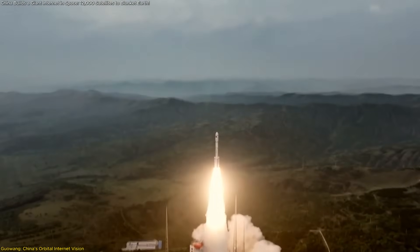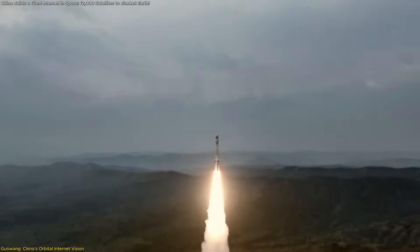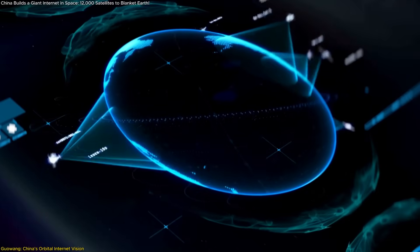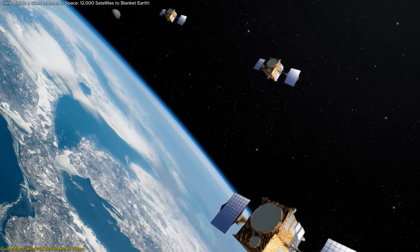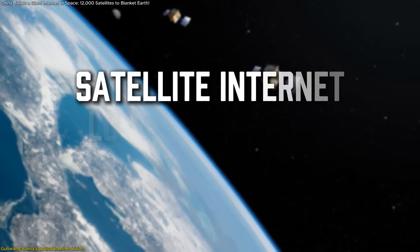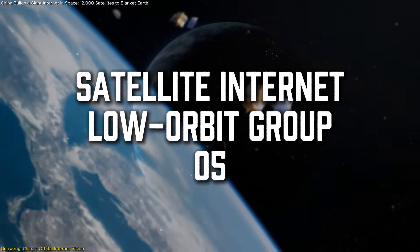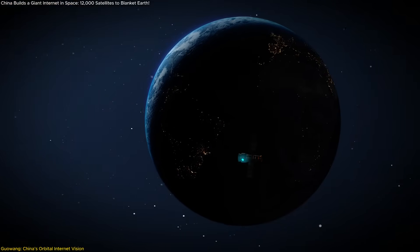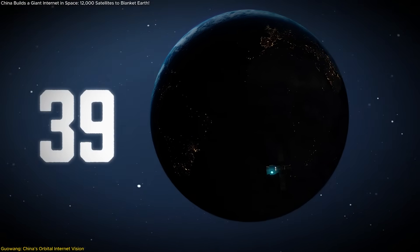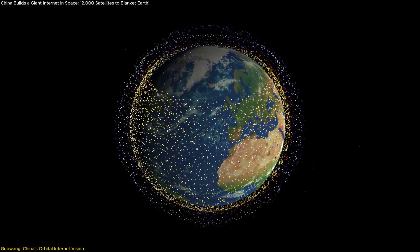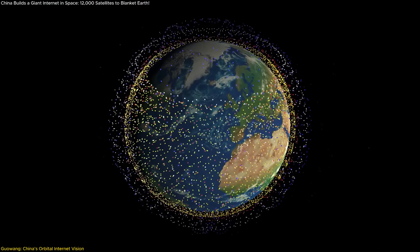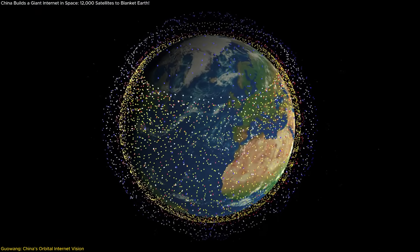This all started formally in 2022, but the pace has rapidly accelerated in 2025. China recently launched a group of satellites identified as Satellite Internet Low-Orbit Group 05. With this, the total number of Guang satellites in orbit has reached 39. That number might seem small, but it's only the beginning of what's planned to be a 12,000-plus satellite constellation over time.